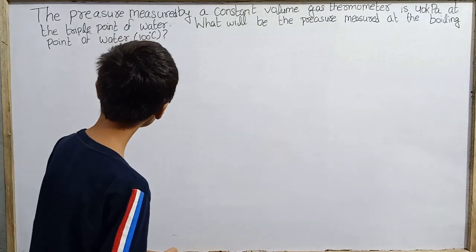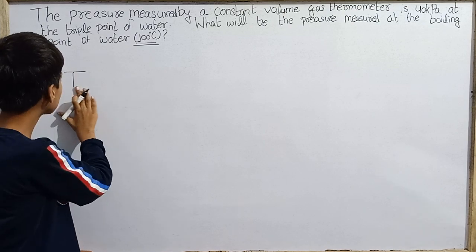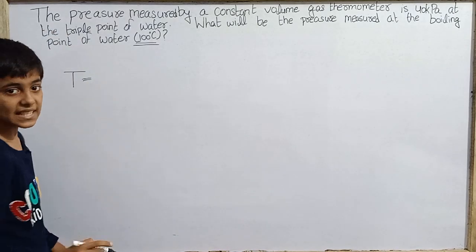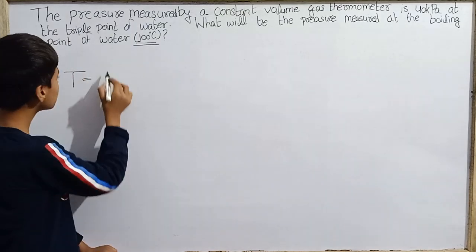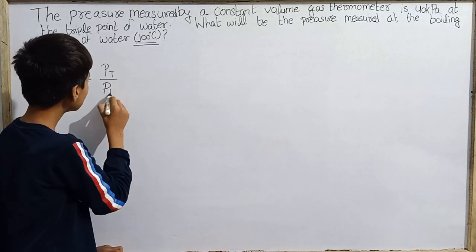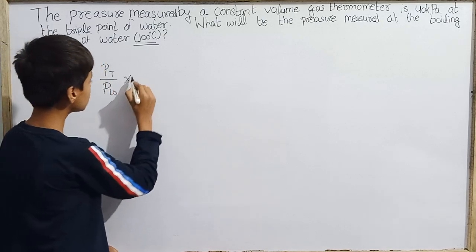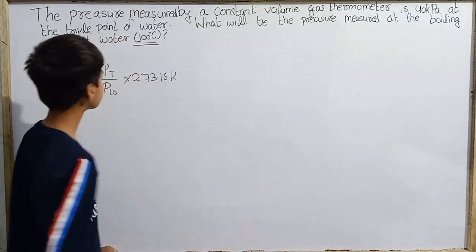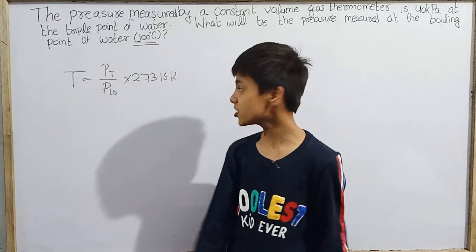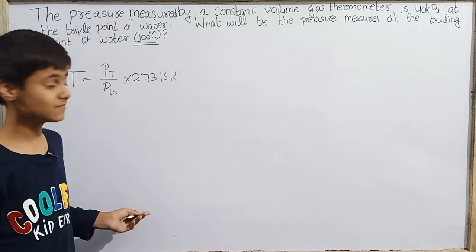Now let's find out at 100 degrees Celsius or boiling point of water, how much pressure will be measured. So here we are going to do the question and there's one very beautiful equation to solve the question. I mentioned in a previous video on thermodynamics that temperature T is equal to P at T over P at triple point times 273.16 Kelvin.